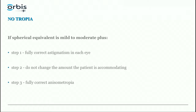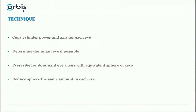We don't want to change the amount the patient is accommodating because that is one of the key factors affecting whether they tolerate the glasses. Number three: fully correct the anisometropia. This is a major source of mistakes — you might correct the astigmatism but if one eye is equivalent sphere plus one and the other is plus two, you must also correct the anisometropia.